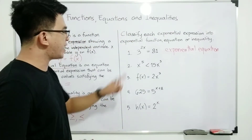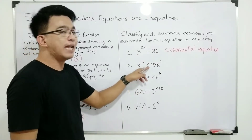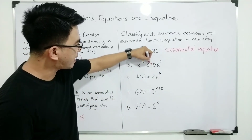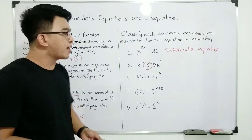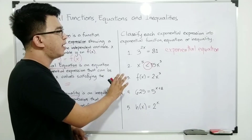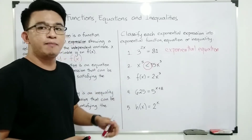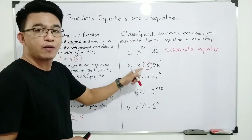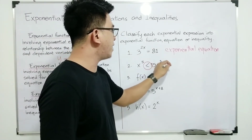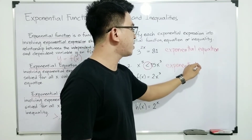Now let's move on to item number 2. We have x raised to the 5th power less than 15x cubed. We can easily distinguish this — since it uses a less than symbol, which is an inequality symbol, this one will fall under exponential inequality.